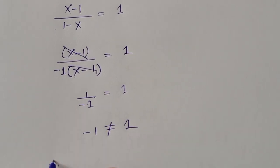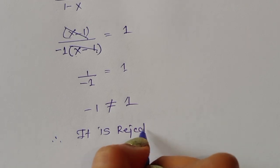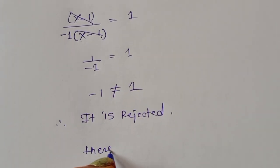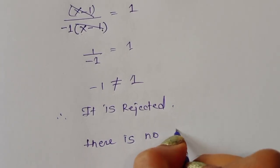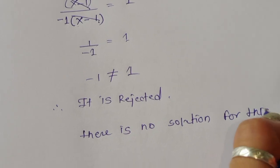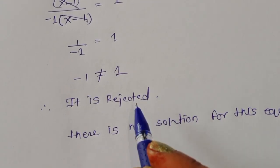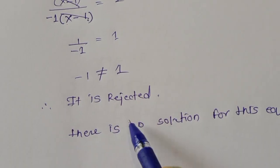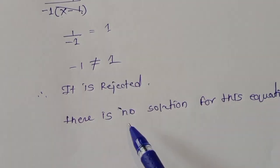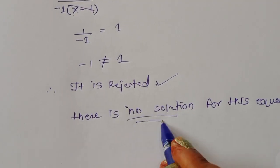Since minus 1 is not equal to 1, this is also rejected. Therefore, there is no solution for this equation. We solved using two methods — in the first method the value was not satisfied, and in the second method also the value was not satisfied. So there is no solution.